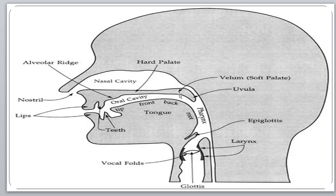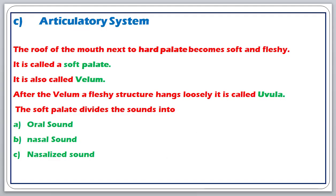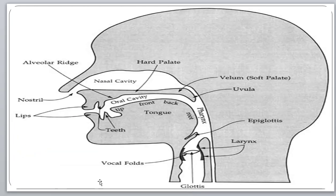After the velum, a fleshy structure hangs loosely — it is called the uvula. If you look in the mirror you can see this fleshy structure hanging. It acts like a filter: the voice coming from the vocal cord is filtered by the uvula, and it sends the sound either through the nose or through the mouth.